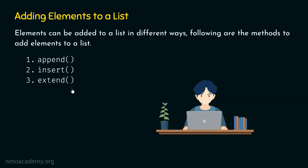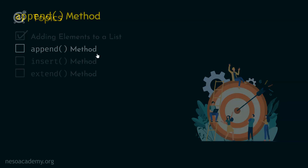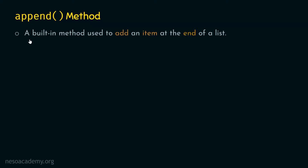We will start with the first method, the append method, and see how it works. Append method is a built-in method used to add an item at the end of a list. We do not have a choice of adding items at any position — we can only add items at the end of a list using append method.